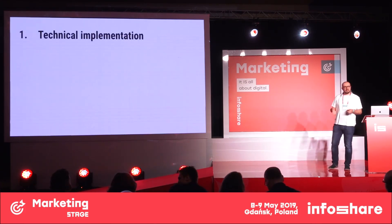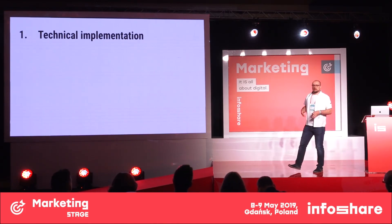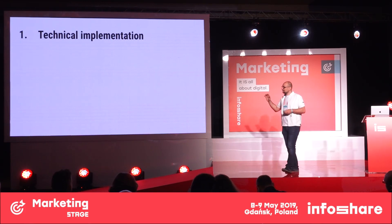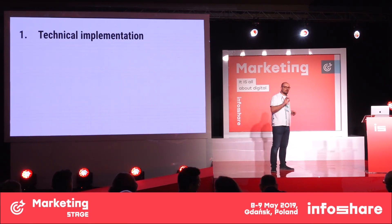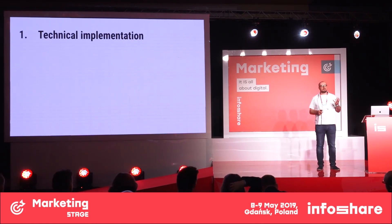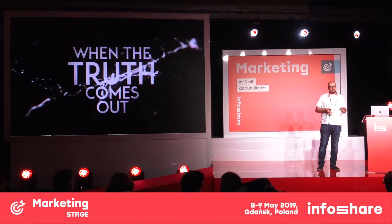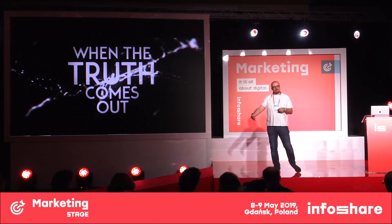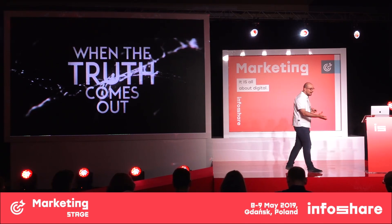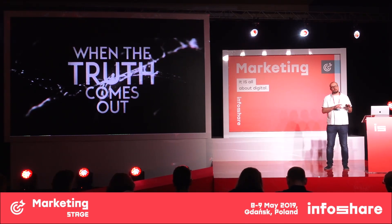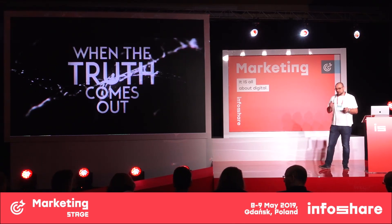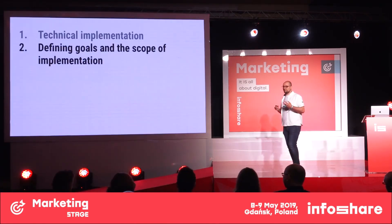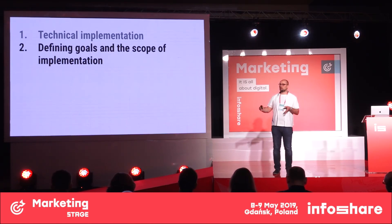The first step is technical implementation. I know that we are business people — we don't start with technical issues, rather we define business goals. The first three points should be done at the same time. But starting with technical implementation gives you one quick win — this is the moment when the truth comes out. We will know what kind of data resources about current clients we will be able to access. Going into details, what assets we currently have is really, really useful. But the most important issue is defining goals and the scope of marketing automation implementation.